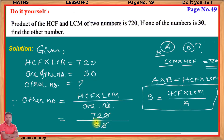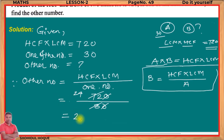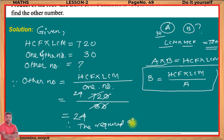720 divided by 30: 3 into 24 is 72, so the answer is 24. Therefore, the required number is 24. That is the answer.